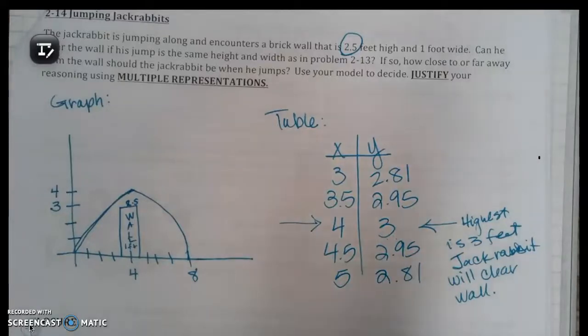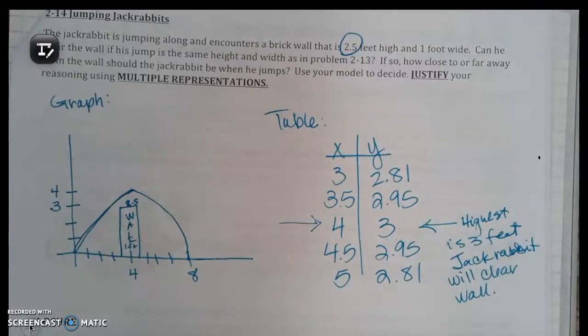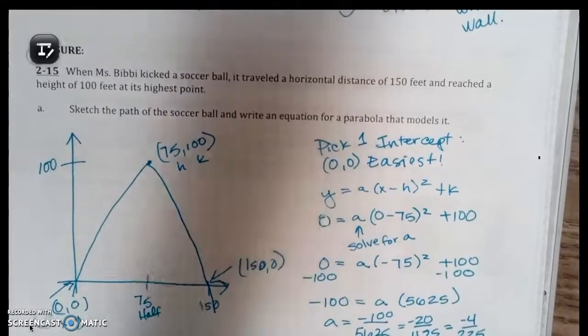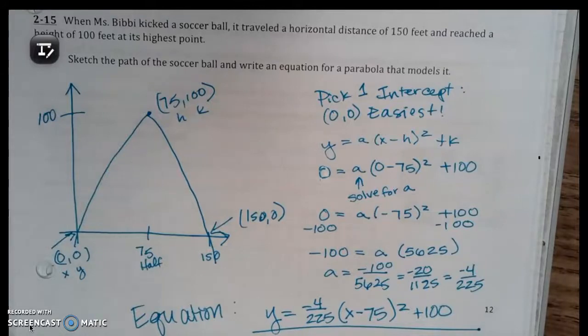All right, we've got one more. Is anybody still writing? Can't tell. Okay. Well, you just came back so you'll have to get it in your group. All right, so the last problem in this section says when Miss Bibby kicked a soccer ball, it traveled a horizontal distance of 150 feet.